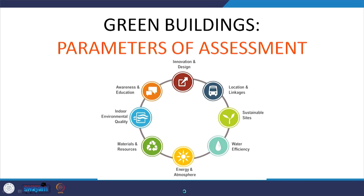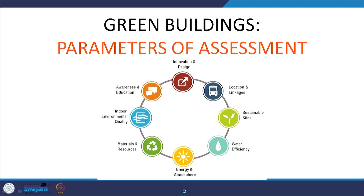When we look at green buildings, the broad categories of assessment parameters are: sustainable sites, water efficiency, energy and atmosphere, materials and resources, indoor environmental quality, awareness and education, and innovation and design with location and linkages. These parameters are given different weightages in different rating systems, which vary from country to country. In some rating systems energy and atmosphere is the most weighted; in others, materials and resources or sustainable sites are most important. In some cases, awareness and education is totally absent.